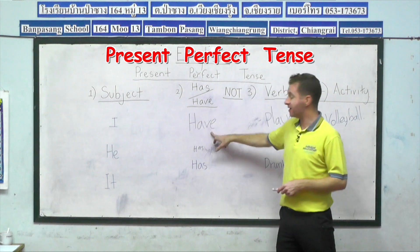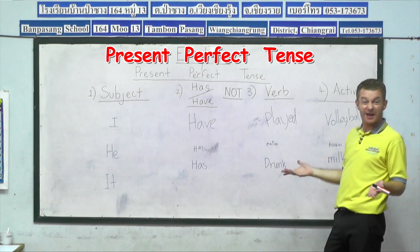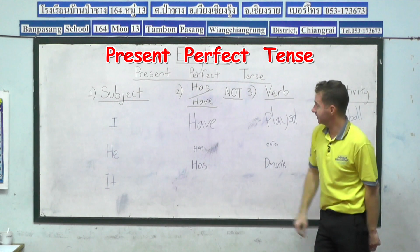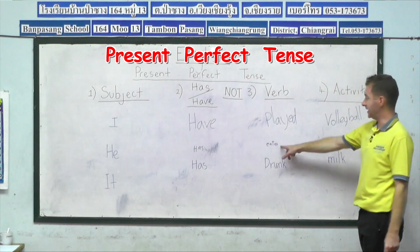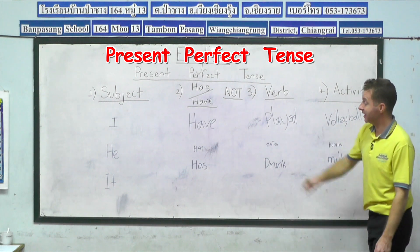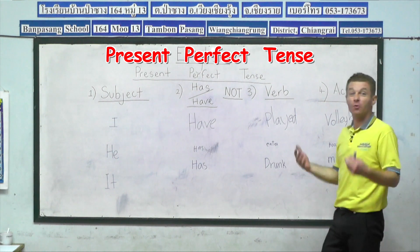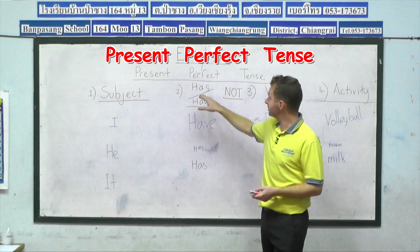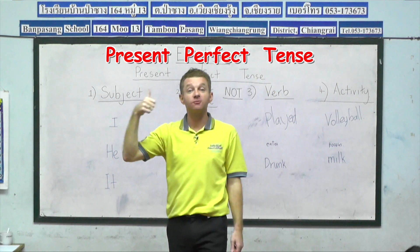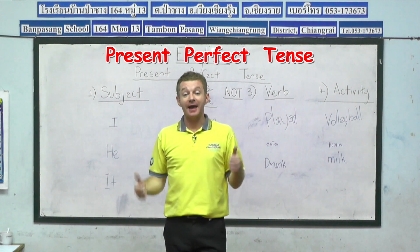I have not played volleyball. You see how we change it quickly from positive to the negative? He has not eaten noodles. It has not drunk milk. So by just adding the one word not in the correct place, we can change it from a positive sentence — something we've done — to a negative sentence, something we haven't done.